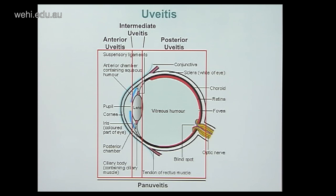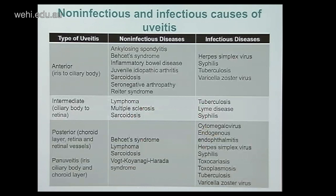Types of uveitis are based on the area of the eye affected. Anterior uveitis affects the iris and anterior chamber and is by far the most common form. Intermediate uveitis affects the vitreous cavity. Posterior uveitis affects the retina and choroid. Pan-uveitis is inflammation of all layers. There are many infectious and non-infectious causes — some lead to specific types, like multiple sclerosis causing intermediate uveitis, while others like Bechet syndrome or syphilis can cause multiple types.